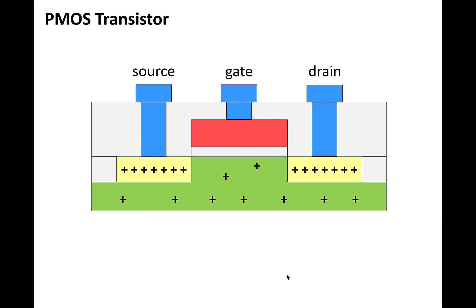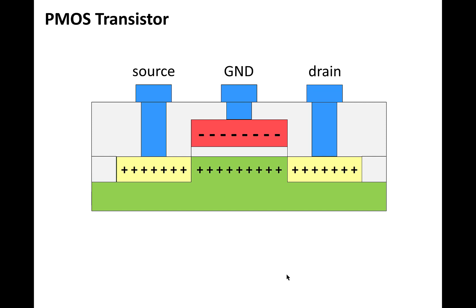The structure and operation of a PMOS transistor is the opposite of an NMOS transistor, and it's based on the flow of positive charge. Here, the source and drain are infused with a material like boron so that there's a high concentration of positive charge, while the silicon substrate is diffused with something like phosphorus or arsenic, so there's a low concentration. If we put a positive voltage on the gate of a PMOS transistor, like charges repel and the positive charge in the substrate is driven away from the area under the gate. But if we put ground on the gate, then negative charge flows onto the gate and opposites attract, pulling the positive carriers into the region between the source and the drain, creating a conducting channel and effectively closing the switch.